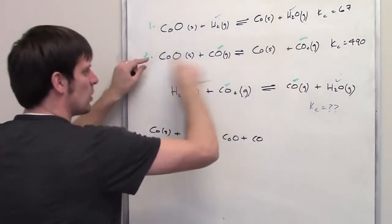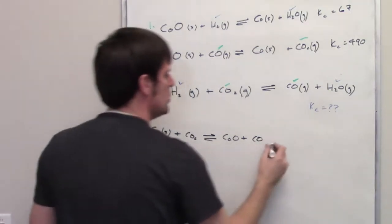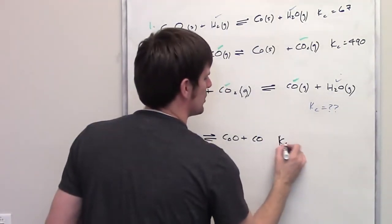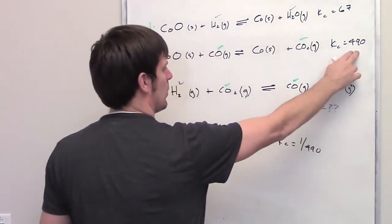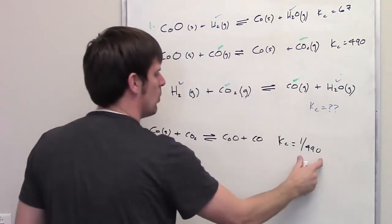Now what does that do to the Kc? If you take any equation and reverse it, which you totally can, the new Kc for it becomes the reciprocal, so it becomes 1 over 490. So it's 490 here. I flip it. It becomes 1 over 490.